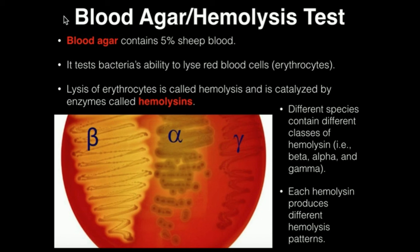One example of an all-purpose agar base that we can use is Trypticase soy. We can also enrich that agar with red blood cells, and this is usually done by using some percentage of red blood cells from some organism. We're going to use something called blood agar, and our blood agar is going to contain 5% sheep blood, which is going to specifically contain the red blood cells.